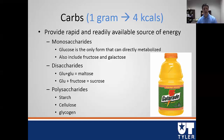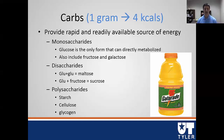The next form is disaccharides — two sugars put together. For example, glucose plus glucose equals maltose, and glucose plus fructose equals sucrose, which is table sugar. Sucrose makes up about 25% of the American diet, which is not a good thing. Starch and cellulose are both plant-based polysaccharides that we get from eating plants.